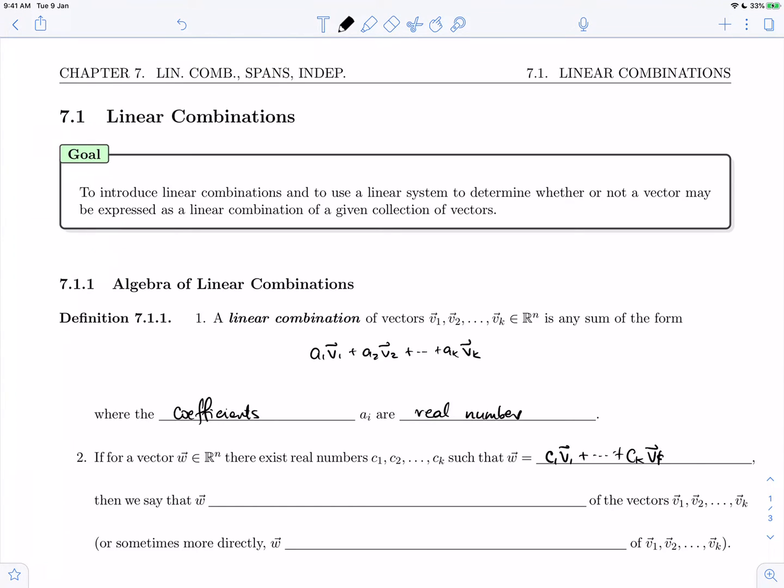Then we say that w may be expressed as a linear combination of the vectors v1 through vk. Sometimes we say more directly that w simply is a linear combination of these vectors.